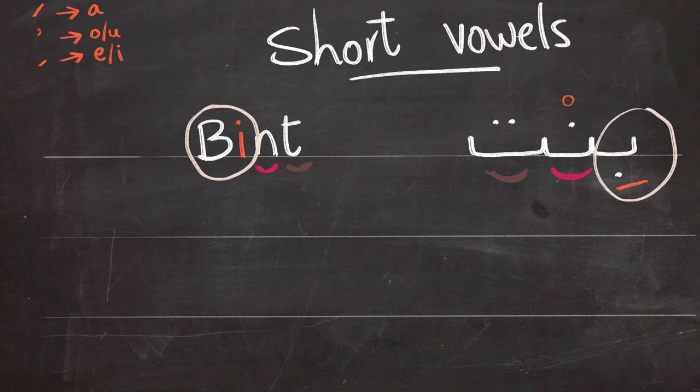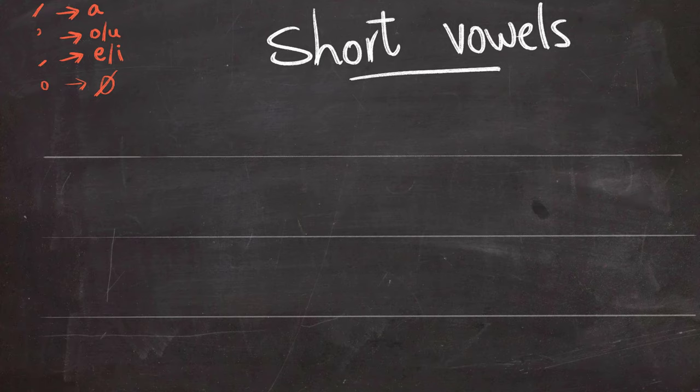So you'll have bint. Only one vowel in this word. And we're going to add the sukoon which is symbolized by a circle. A perfect circle. Well as perfect as you can make it of course, and that means no vowel. No short vowel.